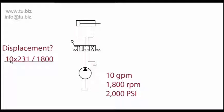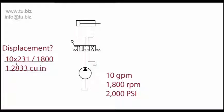I'll punch in the numbers: 10 times 231, divided by 1800, and it gives you a displacement of 1.2833 cubic inches per revolution. So now we have to go and select a pump for this application — now we have the size.